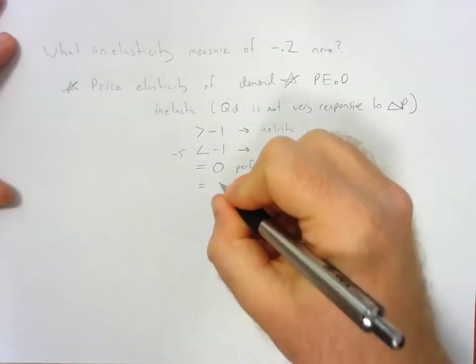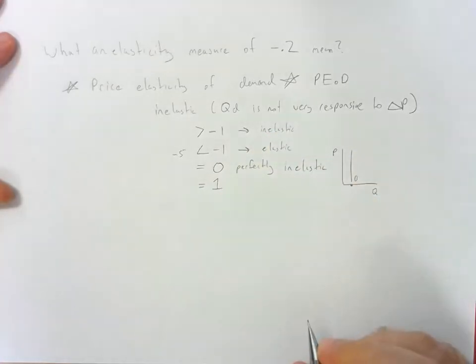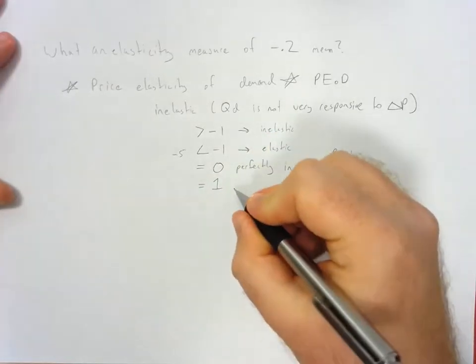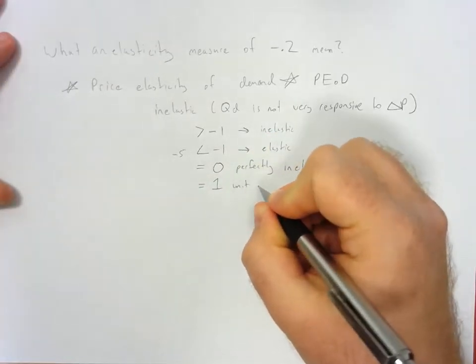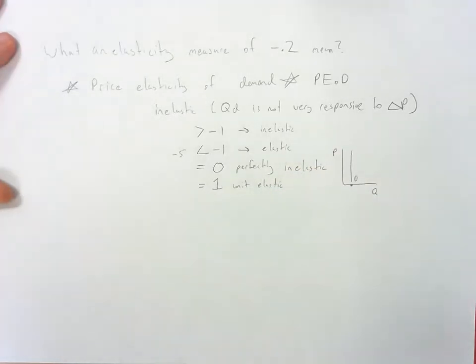And then finally, you still have to learn about it, but it's very rare in practice. You have a price elasticity of demand measure equal to 1. That means that you have a unit elastic demand.